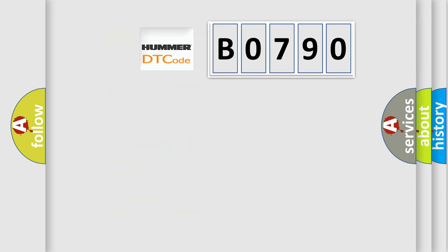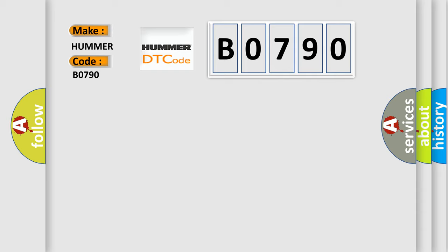So, what does the diagnostic trouble code B0790 interpret specifically for HUMMER car manufacturers? The basic definition is: Sensor cluster signal out of range.